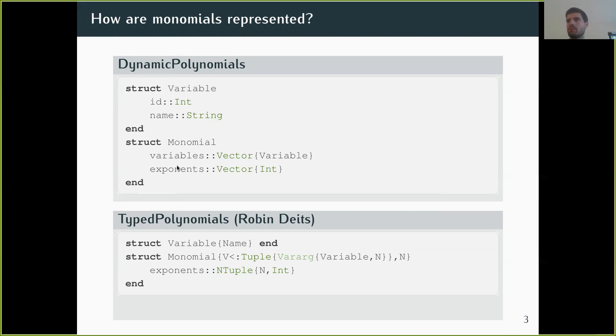But then Robin came out with a new idea in TypedPolynomials. He thought that if you had only a few variables, it would be much more efficient to represent the exponents in a tuple. To handle multiplying monomials with different variables, you would take the list of variables and store it in the parameter of the type.